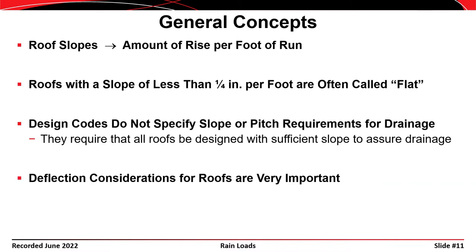Deflection considerations are important for roofs. If roof members are designed to be perfectly straight and then deflect under dead load, rainwater will accumulate in the deflected shape, which is problematic. Typically, roof members are cambered upward so that when dead load is applied they deflect into a straight line — not flat or horizontal, but a straight line that allows drainage.